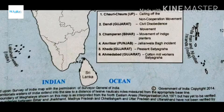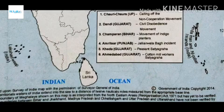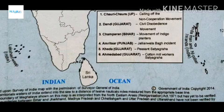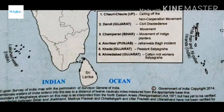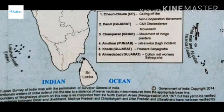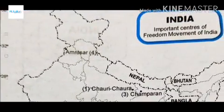In Champaran, Gandhiji did the Champaran movement for the rights of indigo planters and helped them greatly. Next is Amritsar, Punjab, where the Jallianwala Bagh incident happened in 1919 — a tragic incident where a lot of people were killed by General Dyer. Later, Sardar Udham Singh went to London and shot Dyer in revenge. Then Kheda, Gujarat, was also one of Gandhiji's Satyagrahas in 1918, after the Ahmedabad Satyagraha. In Ahmedabad he helped the cotton mill workers.